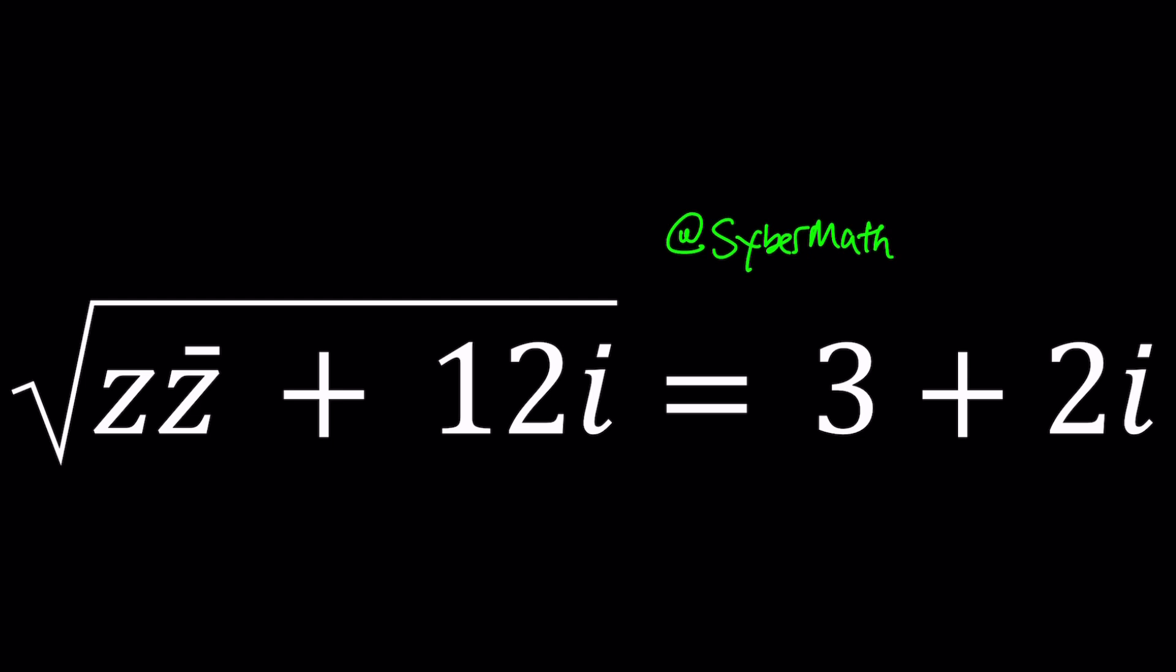So we have this equation where we multiply z and z bar, the complex conjugate of z, and then add 12i to it. By the way, i is the square root of negative one. And on the right hand side we have another complex number. So our goal is to find the z values that satisfy this equation. Z is a complex number and can be defined as A plus Bi where A and B are real numbers and i is the square root of negative one.